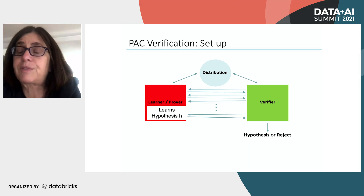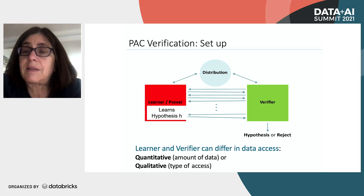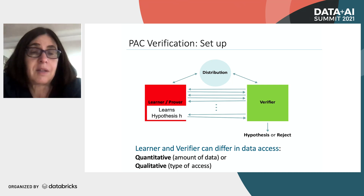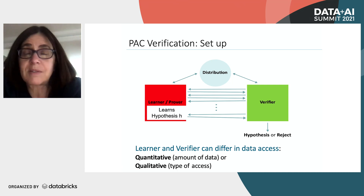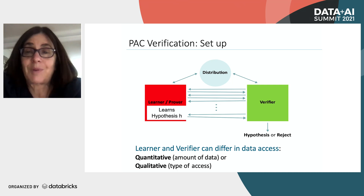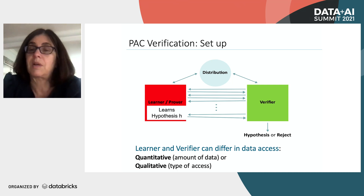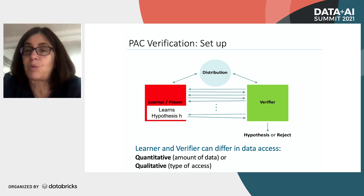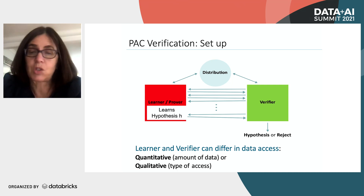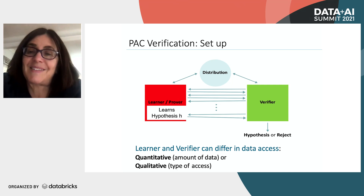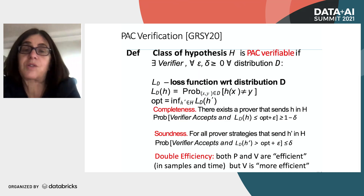Why does the verifier need the learner — couldn't they relearn by themselves? The answer is that the learner may have lots of time and full access to the distribution, while the verifier needs to work quickly and may have only a few samples. We want to say that a hypothesis class is PAC verifiable — probabilistically and approximately verifiable — if a verifier algorithm can achieve completeness, soundness, and efficiency.